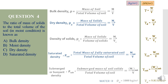The density of water is 1000 kg/m³ and unit weight of water is 9.81 kN/m³. The question asks for the ratio of mass of solids to the total volume of soil — the answer is option C: dry density.